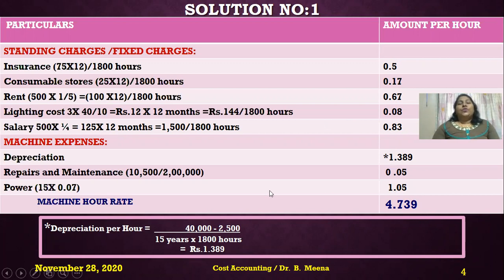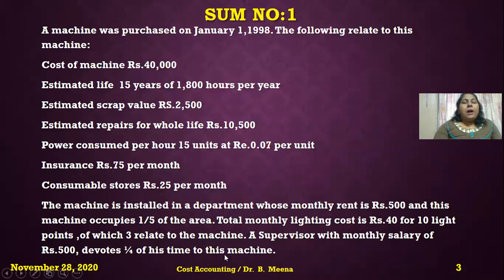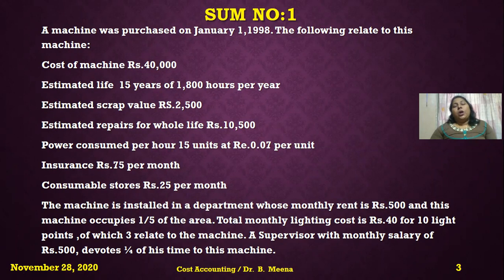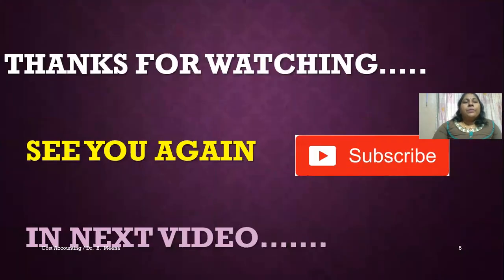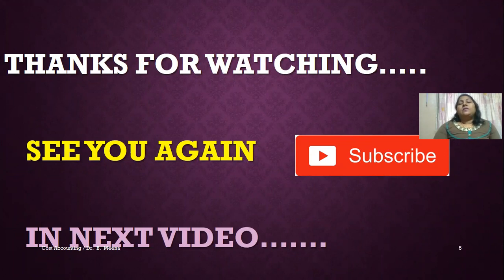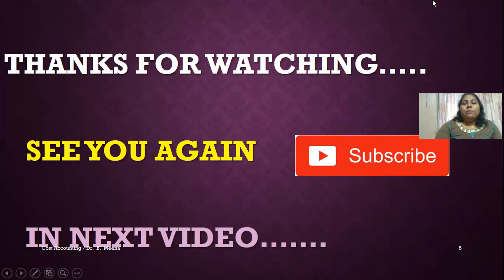Adding all the components together gives a machine rate of 4.739 rupees per hour. This is how you calculate the machine rate when expenses are given monthly for the whole department and need to be converted to the machine's share per hour. Thanks for watching — keep sharing my channel links with your friends and colleagues, subscribe, and click the bell button. See you in the next video!